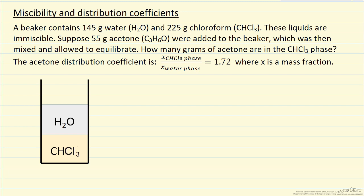So the idea is we have 145 grams water, 225 grams of chloroform, and then we're going to add 55 grams of acetone. Some of the acetone's going to be in the water phase, I'm going to call that M1. And some is going to be in the chloroform phase, M2. We're interested in solving for M2.